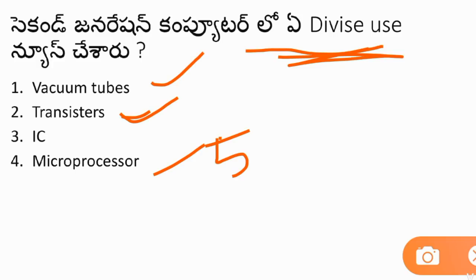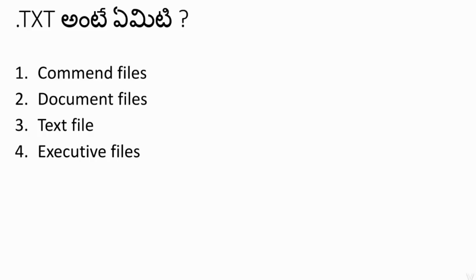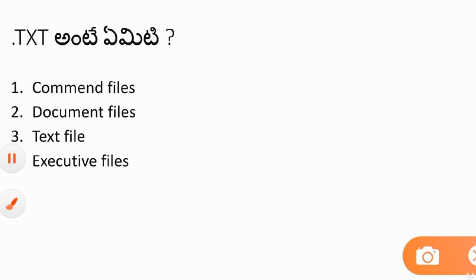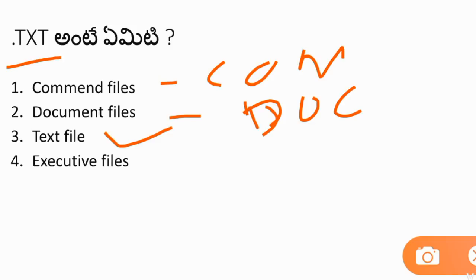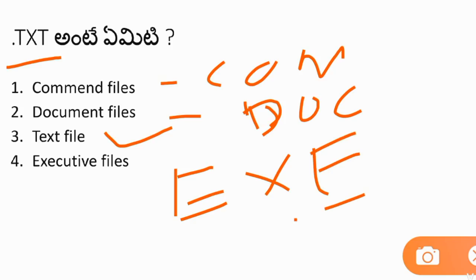Next question about file extensions with .EXT. The options are: command files, document files, text files, and executive files. The answer is text files — .TXT stands for text files. Additionally: .COM = command files, .DOC = document files, .EXE = executive files. Batch files use the extension .BAT.